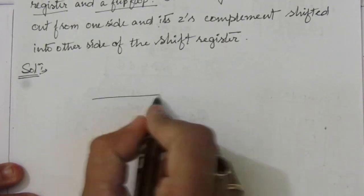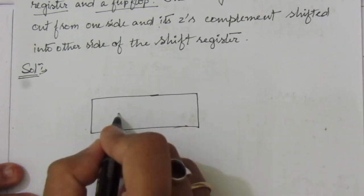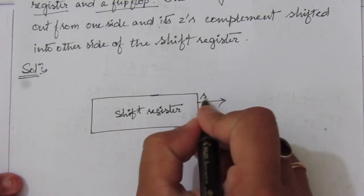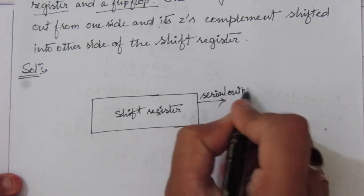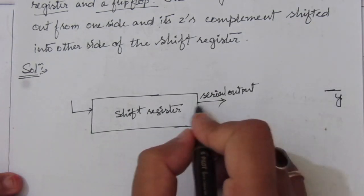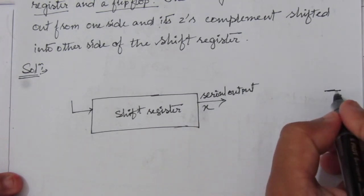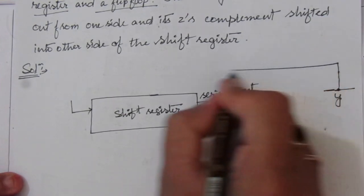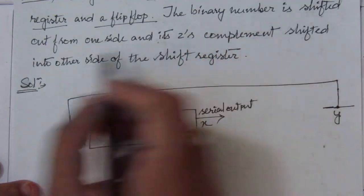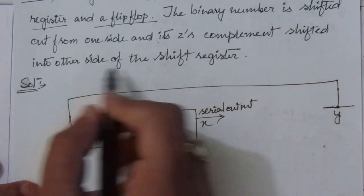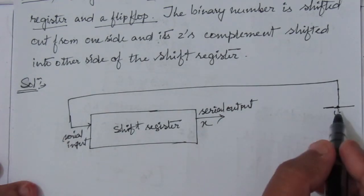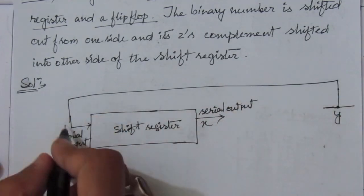So for this design we have to use one shift register and one flip-flop. Let us draw that first. This is the shift register. At one end we have the serial output, and at the other side we take the serial input. Suppose the serial output is x, then we take this two's complement y and feed it back into the serial input. So here we have taken out the binary number from one side and fed the two's complement y back to the serial input.